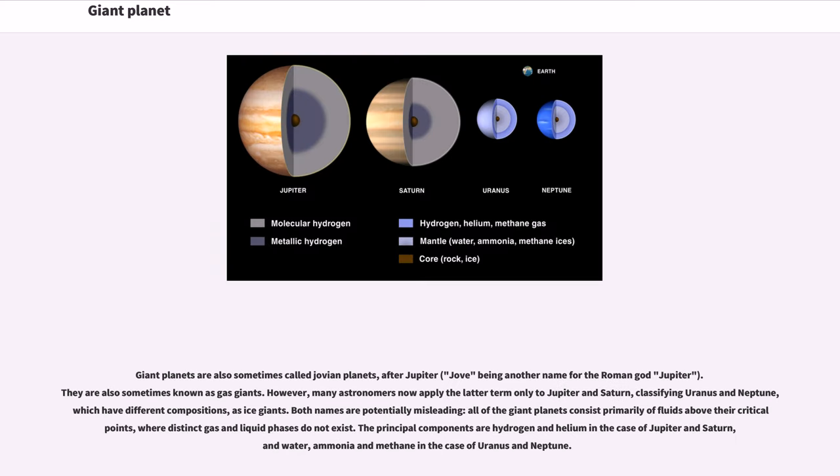Giant planets are also sometimes called Jovian planets, after Jupiter, Jove being another name for the Roman god Jupiter. They are also sometimes known as gas giants. However, many astronomers now apply the latter term only to Jupiter and Saturn, classifying Uranus and Neptune,